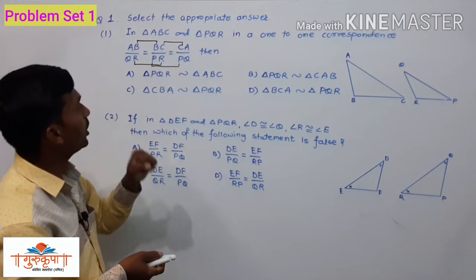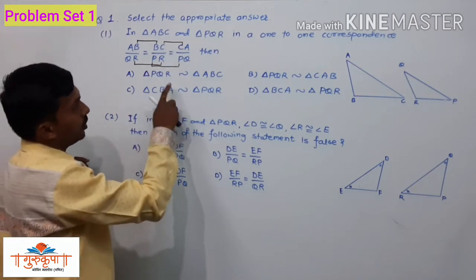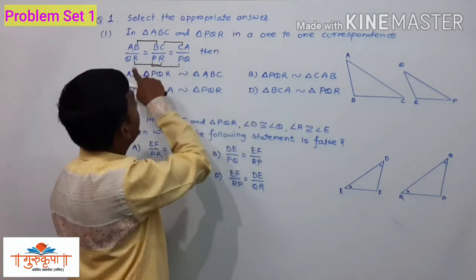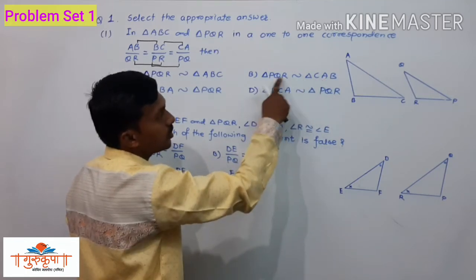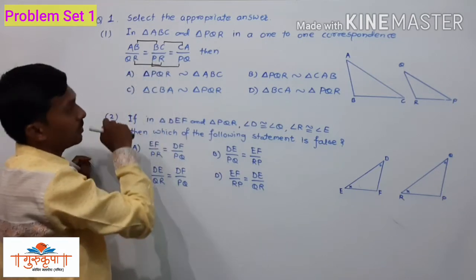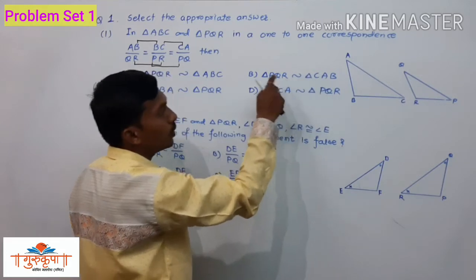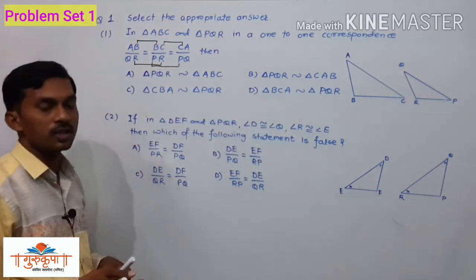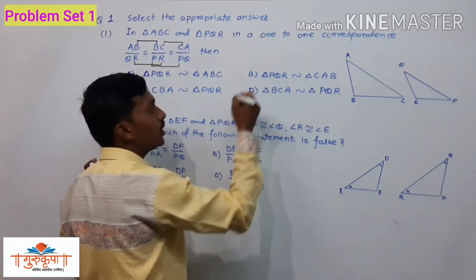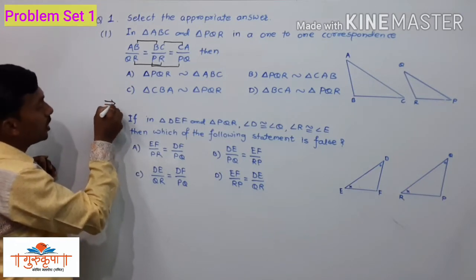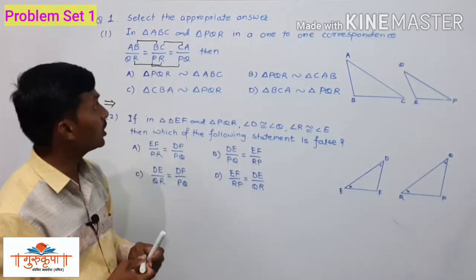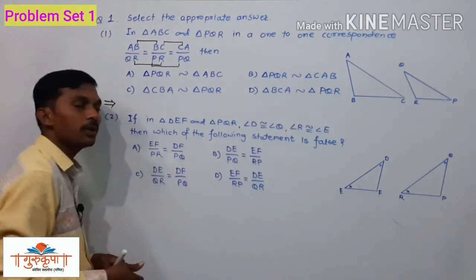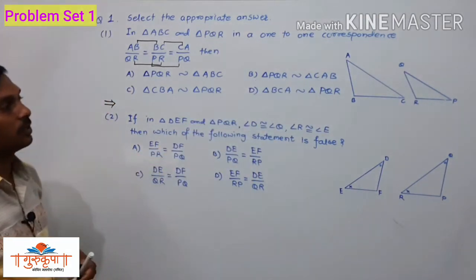We check which option has the corresponding point of A as Q. In option A, the corresponding point of A is given as P — that is not correct. In option B, the corresponding point of A is Q, B corresponds to R, and C corresponds to P — all correspondences are satisfied. So option B is the correct answer: triangle PQR is similar to triangle CAB.